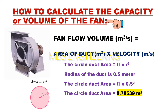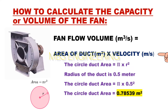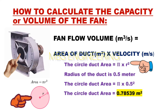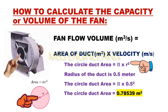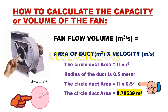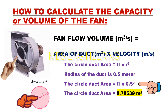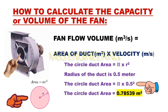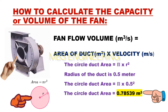The capacity or volume of the fan is equal to the velocity multiplied by the suction ducting area. First, we will calculate the suction ducting area of the fan. Since the fan suction area is circular, the suction ducting area is equal to pi times r squared. The radius of the duct is 0.5 meters, so the suction ducting area is pi × 0.5² = 0.78539 square meters.